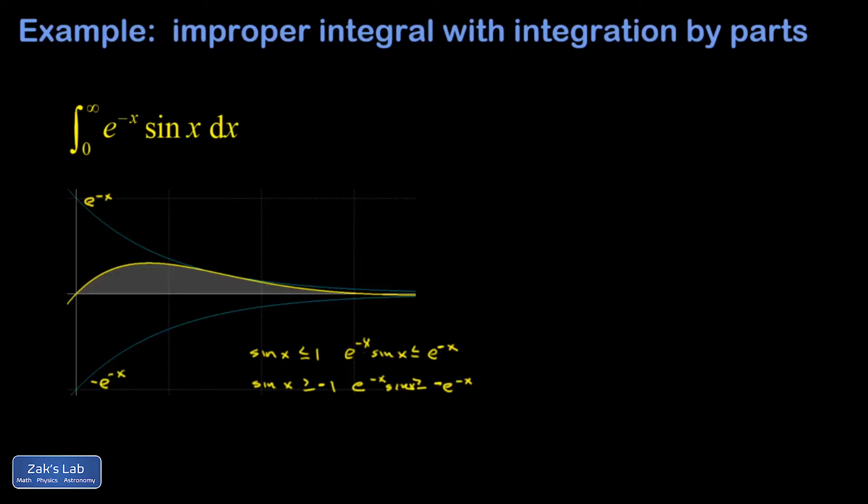Do they squash it to zero fast enough for this area to be finite? We're going to have to use integration by parts to actually compute this integral and find out. I'm going to start by saying let u = e^(-x), then du = -e^(-x) dx.